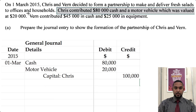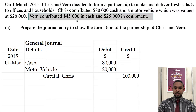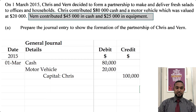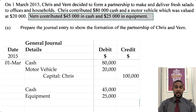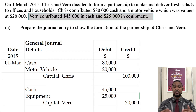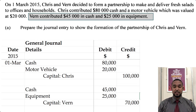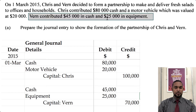Similarly, Verne is contributing $45,000 in cash and $25,000 in equipment — both of those items are assets as well. So we debit cash, debit equipment, and we credit Verne's capital for $70,000, which is the sum of the two assets that Verne is putting into the business.